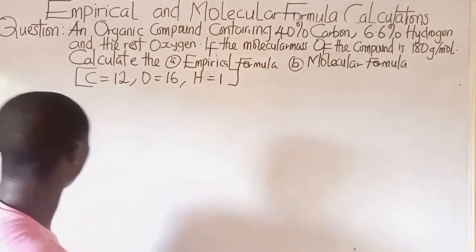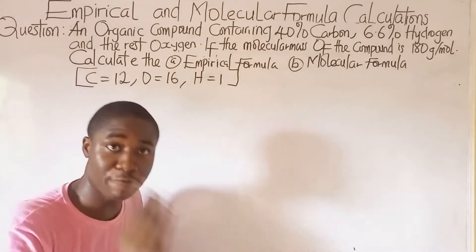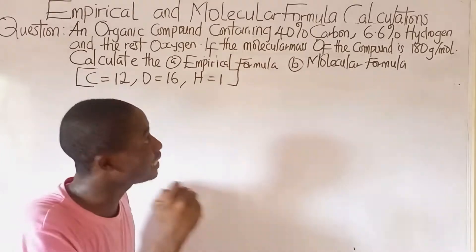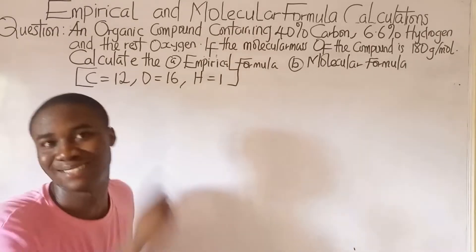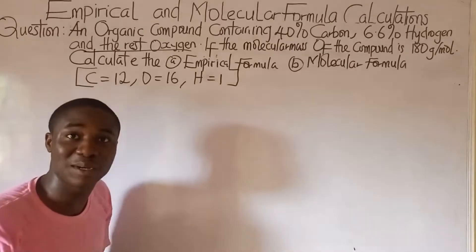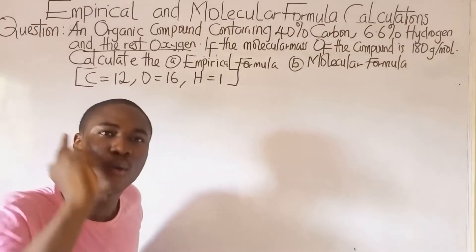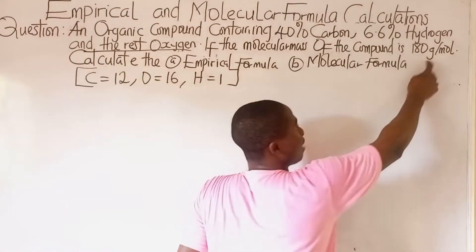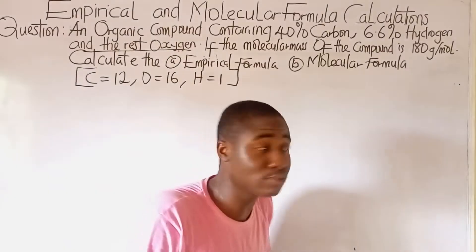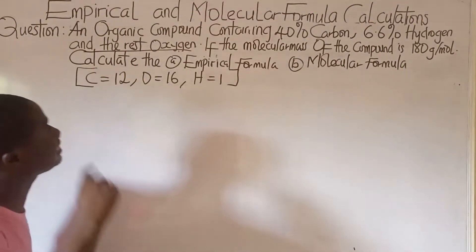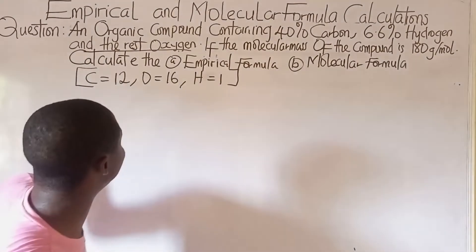The question says: an organic compound containing 40 percent carbon and 6.6 percent hydrogen, and the rest oxygen — that particular word we have to be careful with. If the molecular mass of the compound is 180 grams per mole, calculate the empirical formula of the compound and also calculate the molecular formula of the compound, giving the atomic masses of the elements involved.